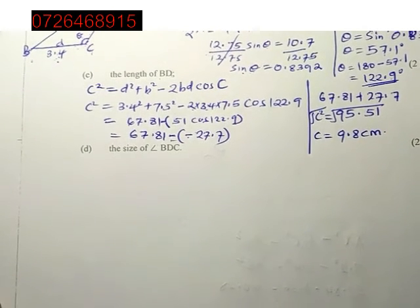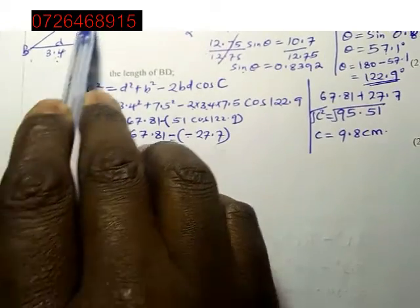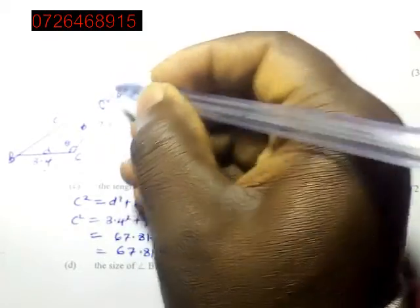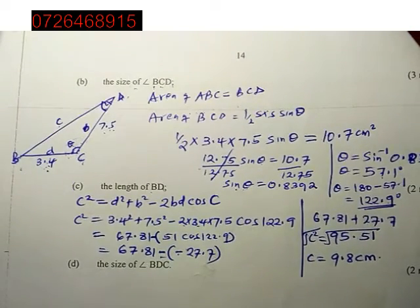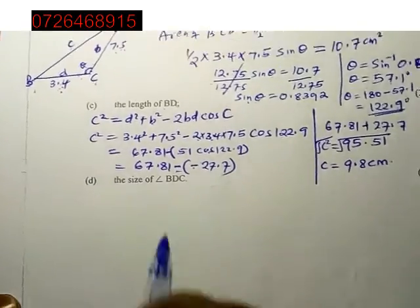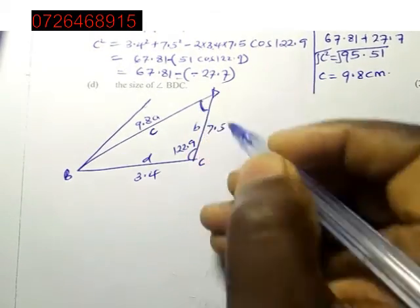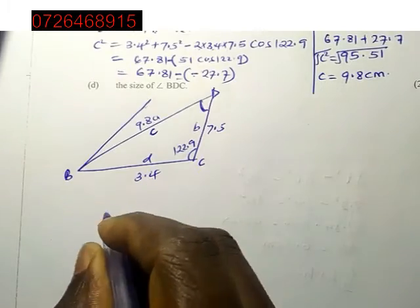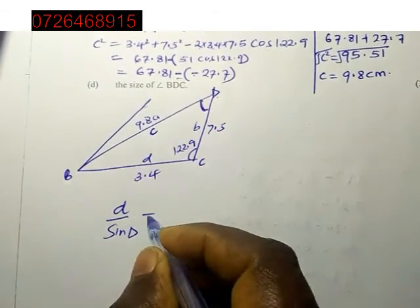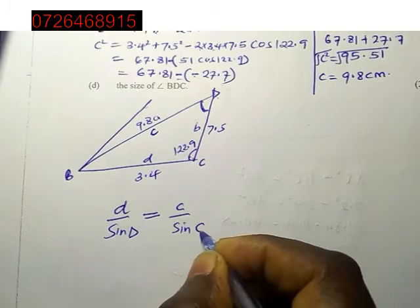Finally, the size of angle BDC. We want this angle here. How do we get that angle? We will use now the sine rule. The sine rule says that d over sine D equals c over sine C.